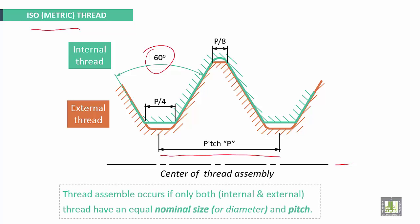Thread assembly occurs only if both internal and external threads have an equal number of threads, and the nominal size or diameter and pitch are also equal. Otherwise, assembly will not occur.